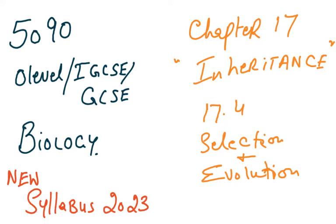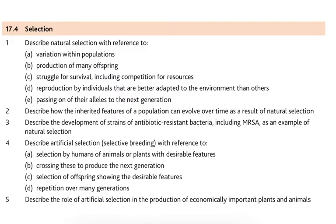Bismillahirrahmanirrahim. 5090 O-level biology, chapter 17 inheritance — we're going to talk about selection and evolution in this video. Looking at the syllabus for 17.4, it says: describe natural selection with reference to variation within populations, production of many offspring — that is overproduction — then struggle for survival, which is survival of the fittest, including competition for resources, then reproduction by individuals better adapted to the environment, and passing on their alleles to the next generation so the beneficial alleles will be passed on.